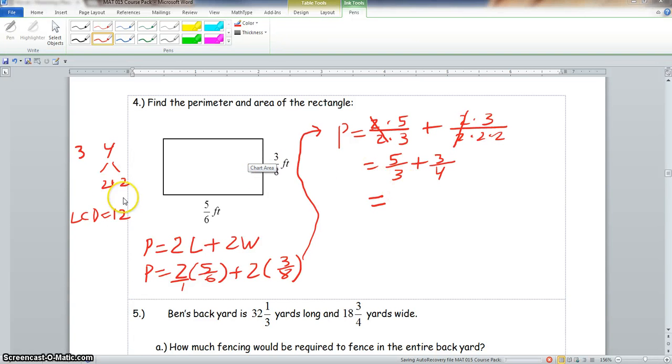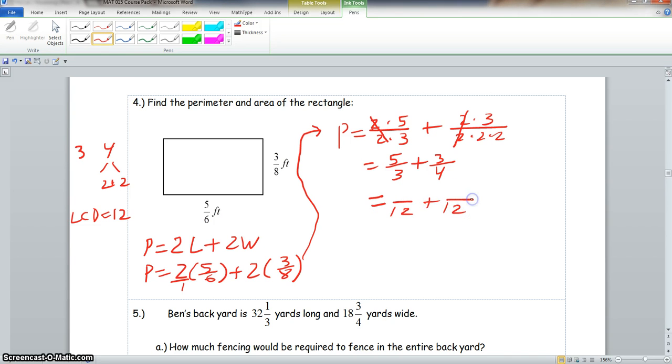Now, as you see here, our common denominator is 12. So this is what we would do. We will rewrite these with a common denominator of 12. Now we ask ourselves, 12 divided by 3 is 4, so we will multiply our numerator and denominator by 4.